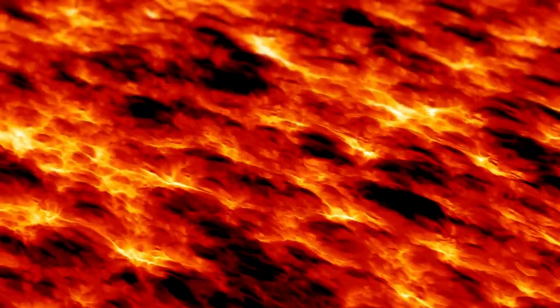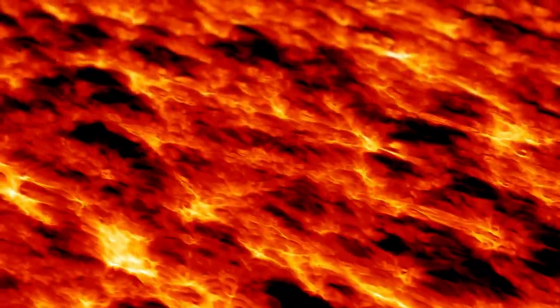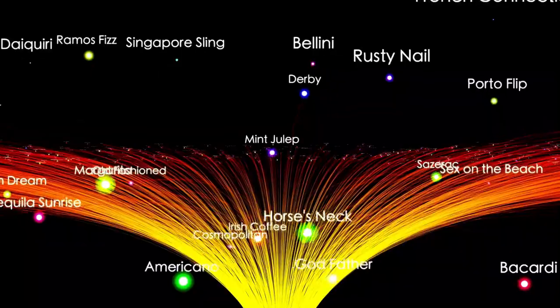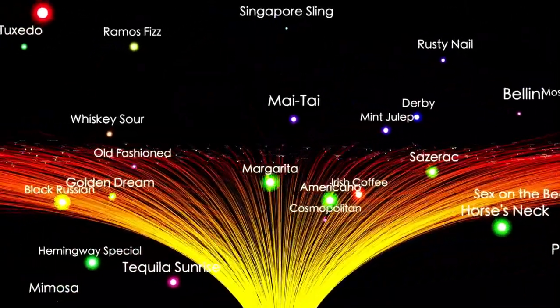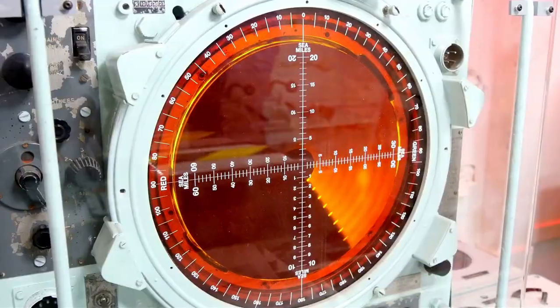Voyager 2 provided additional insights with its functional plasma instrument, which Voyager 1 lost in 1980. It observed that plasma near the heliopause became slower, hotter, and denser, offering a clearer view of the dynamics at this critical boundary.